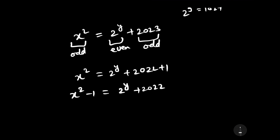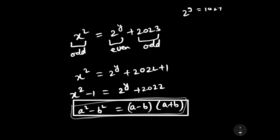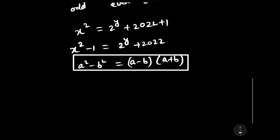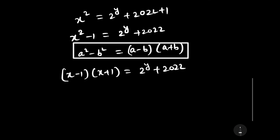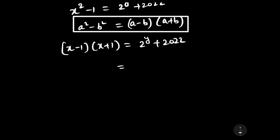We know the identity a² − b² = (a − b)(a + b). Using this, we write x² − 1 as (x − 1)(x + 1) = 2^y + 2022. Further, 2^y + 2022 can be written as 2(2^(y−1) + 1011).